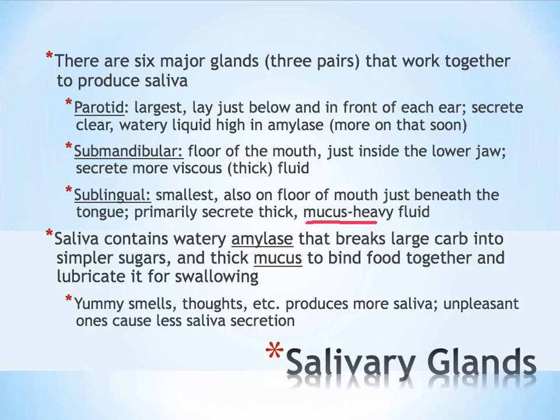Those three pairs of glands together — all of that fluid is mixed in the mouth. The amylase comes into contact with any large carbohydrates, things like starches — bread, rice, pasta, candy — and starts to break those large carbohydrates down into simpler sugars. The thick mucousy component of the saliva helps to clump or bind the food together and make it more slippery to assist in swallowing.